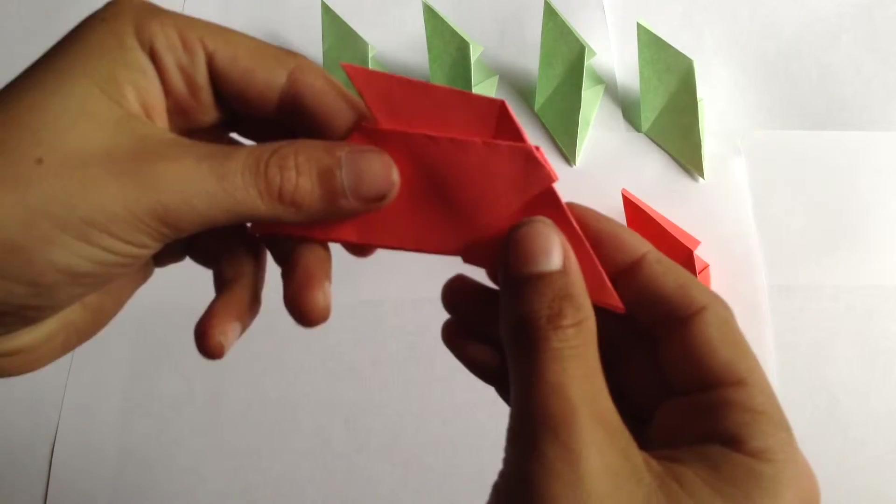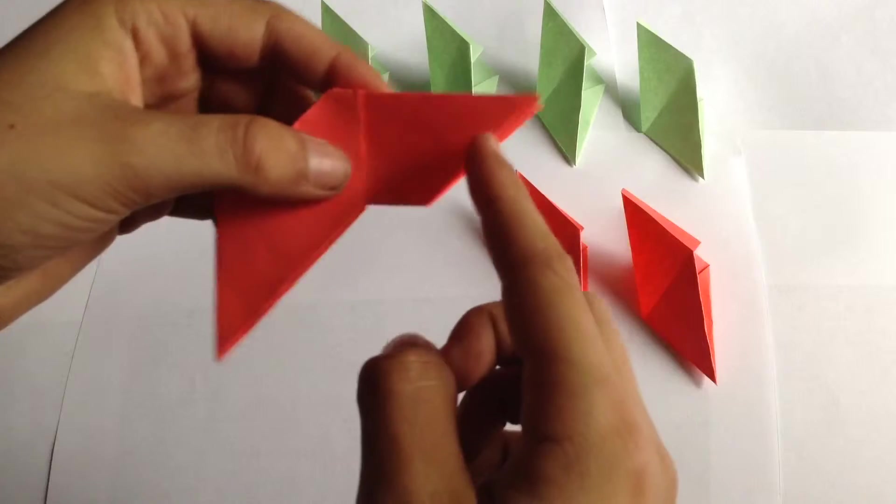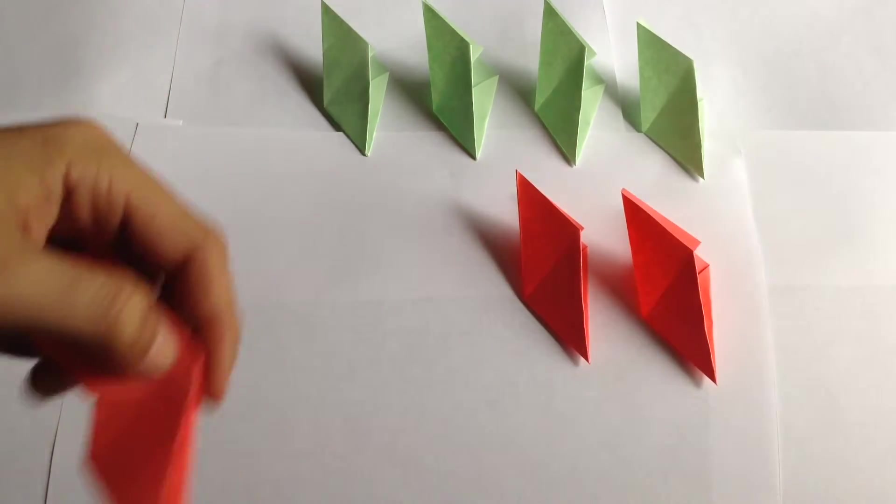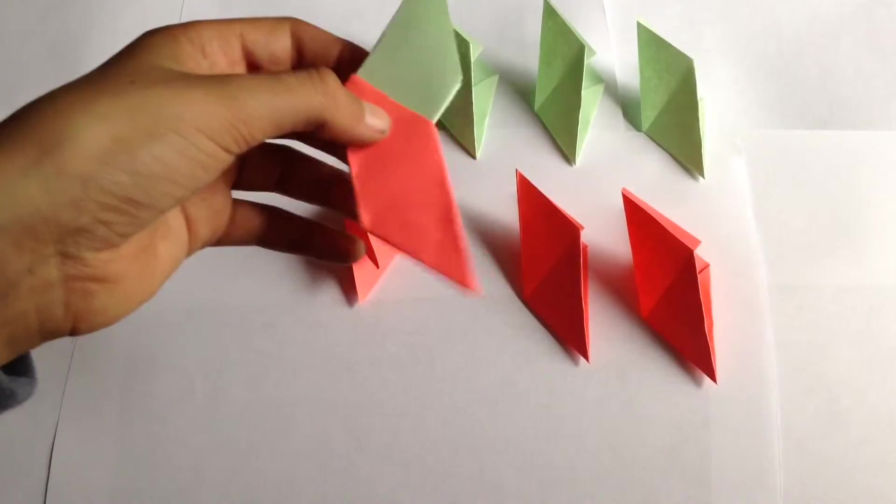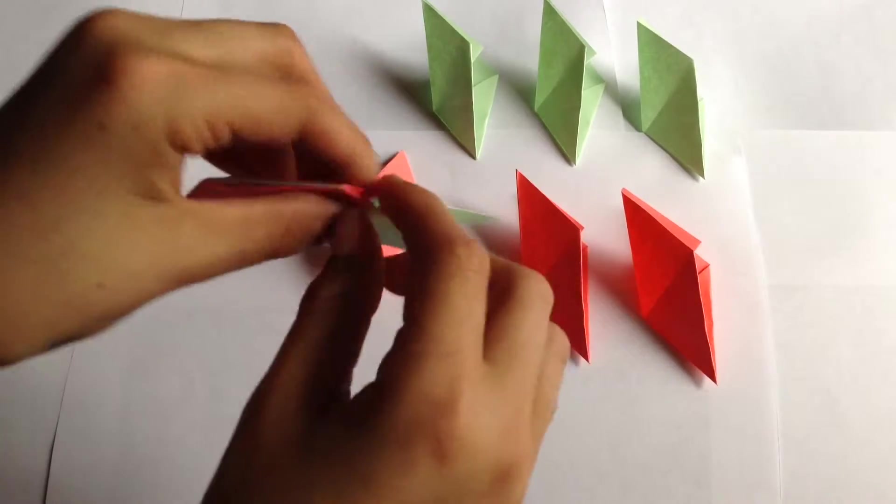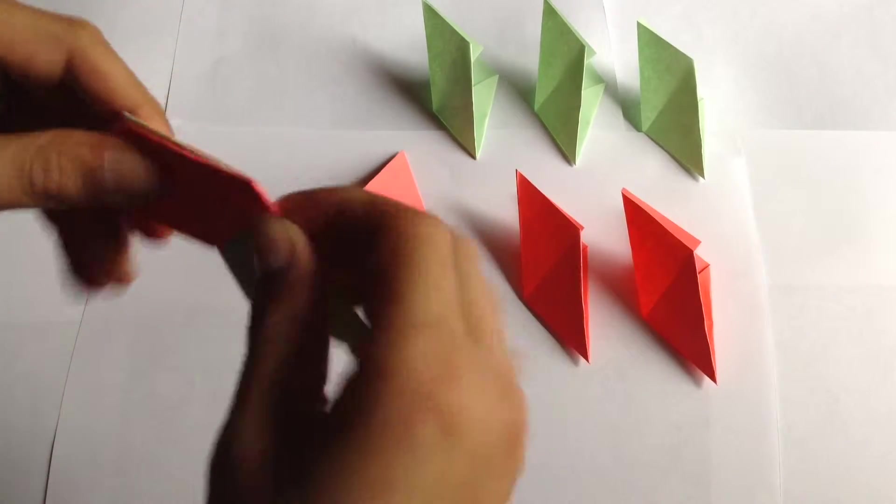And now you've got a sliding piece, and you do the other 8. Make sure that you crease them tight so they stay.